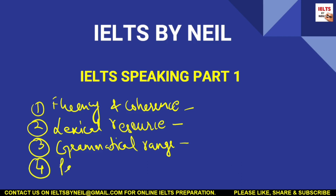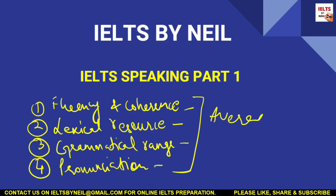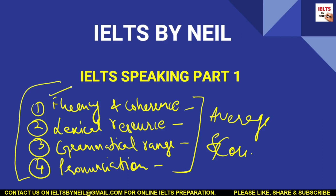The last parameter is pronunciation — they will check how you pronounce your words and how your sounds are. You will get your speaking score based on the average of all these four parameters. So while preparing for the IELTS speaking section, you have to keep in mind all four: fluency, vocabulary, grammar, and pronunciation.